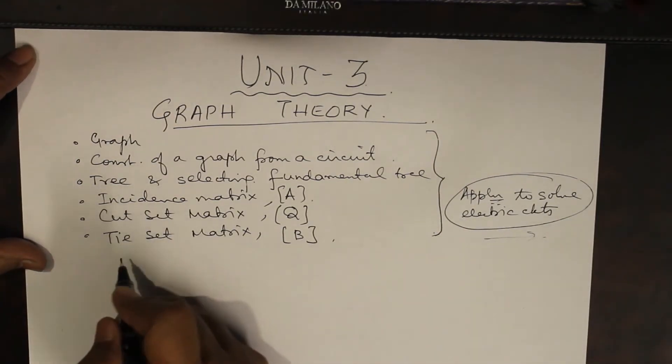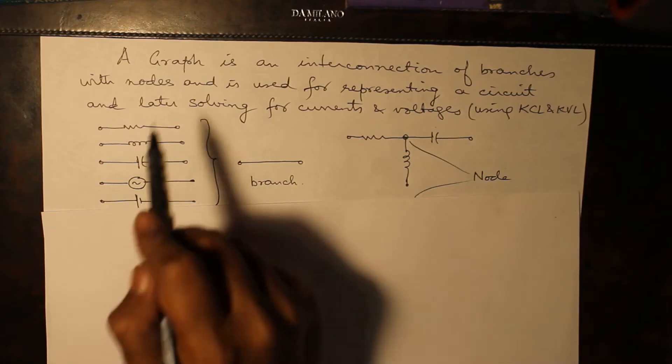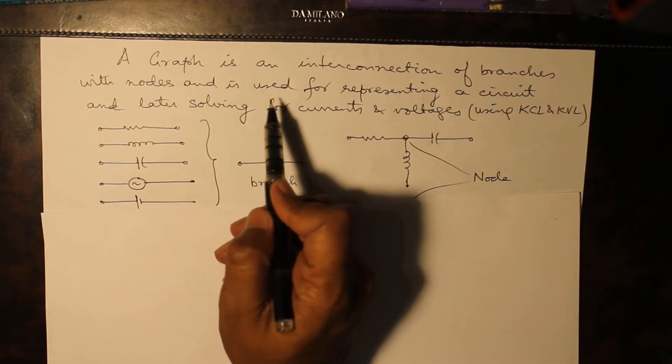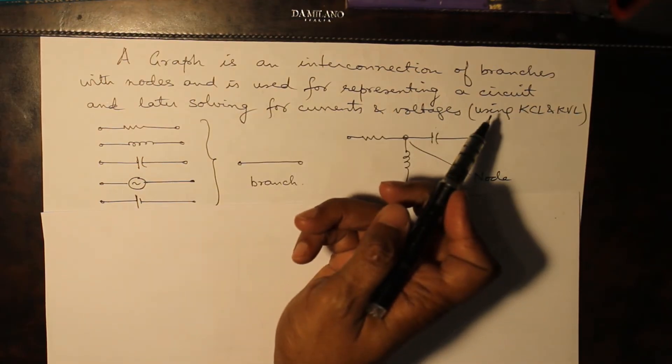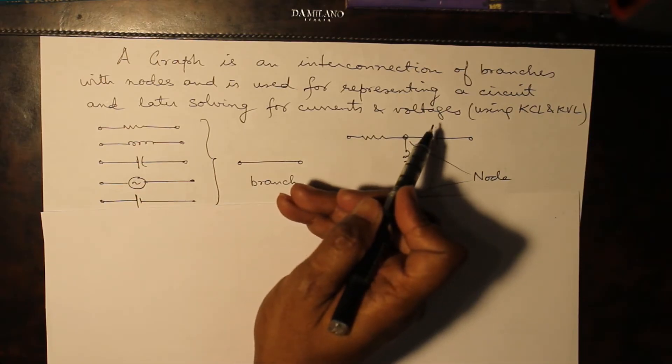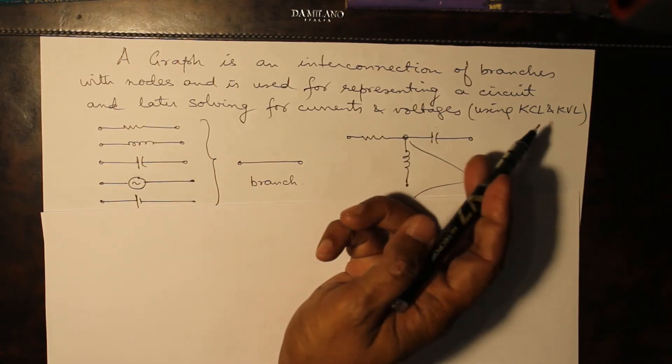So let's start. What is a graph? A graph is an interconnection of branches with nodes and is used for representing a circuit and later solving for currents and voltages which is done using KCL and KVL.